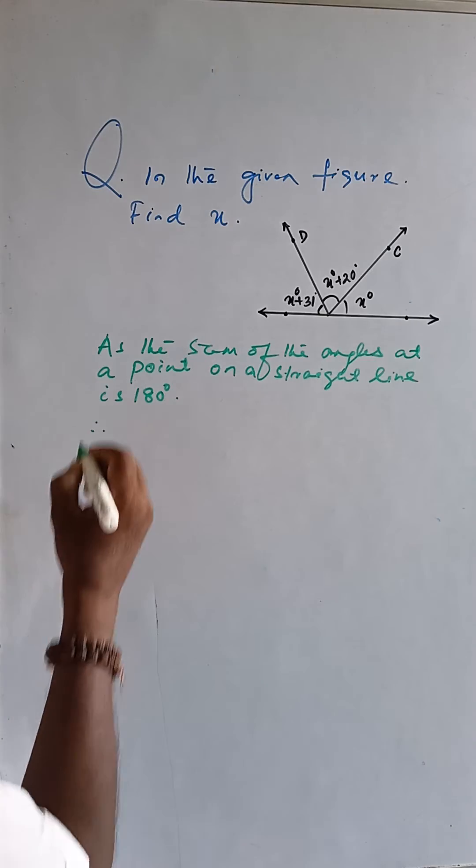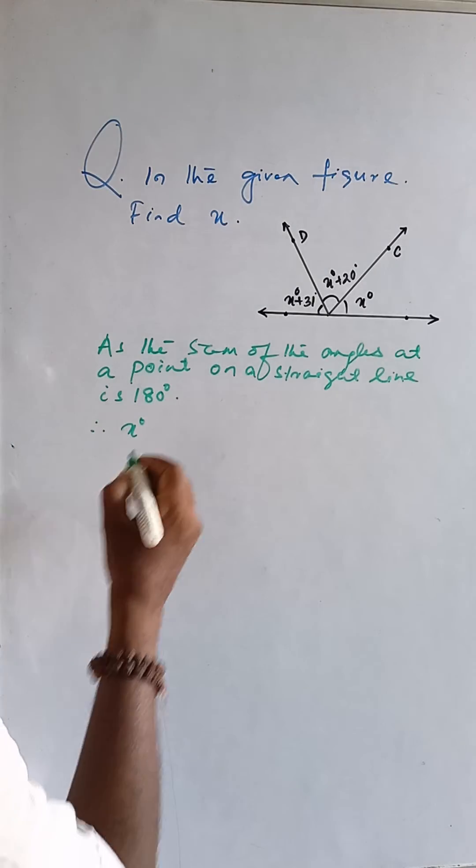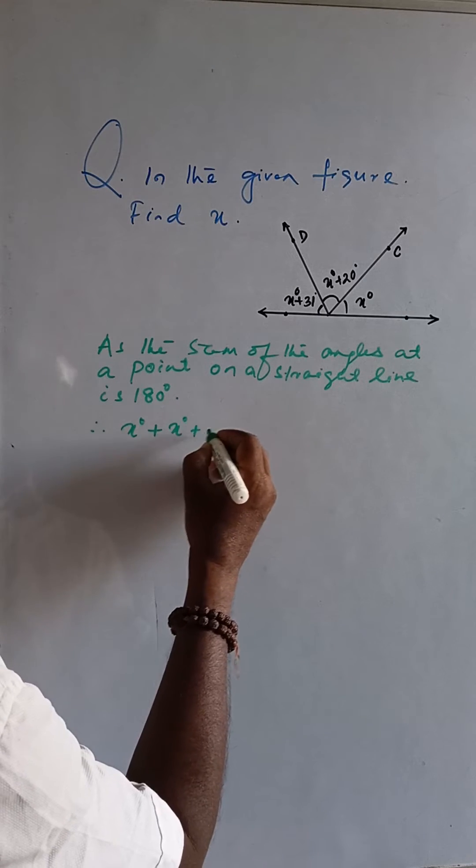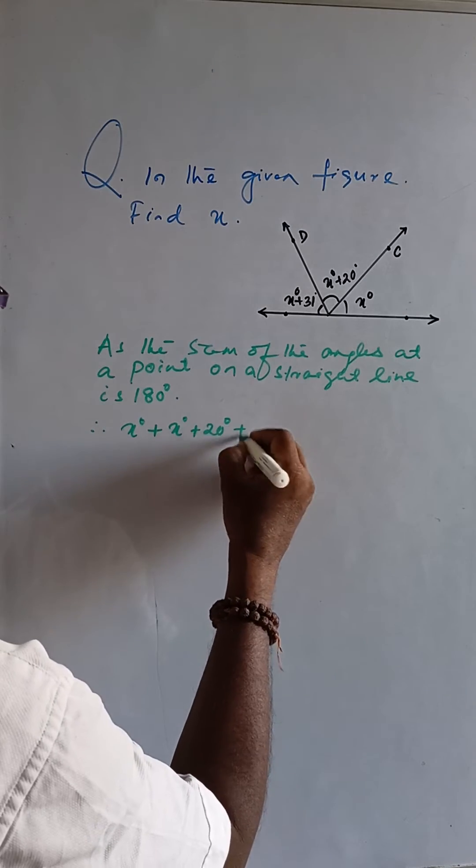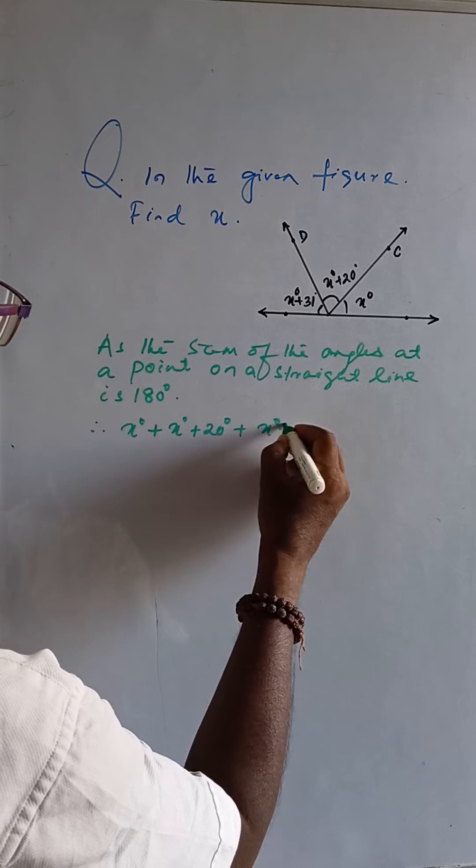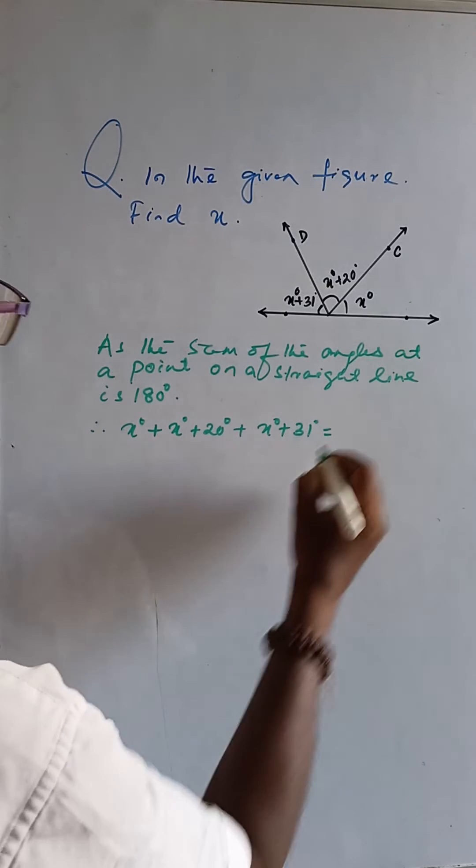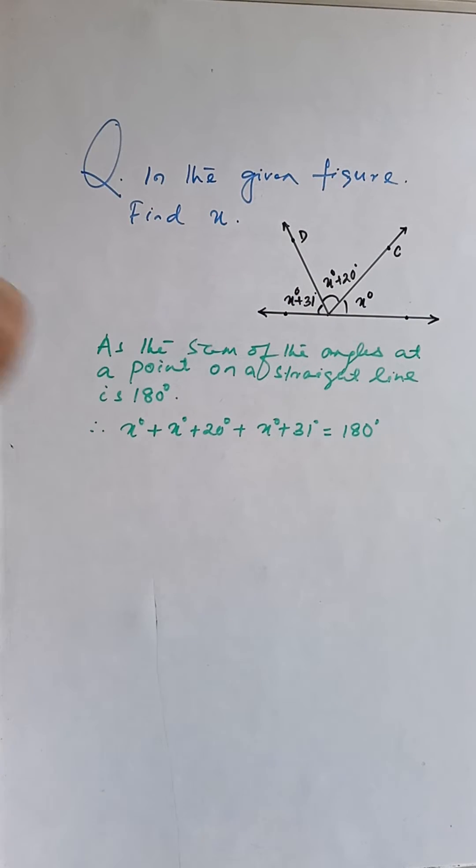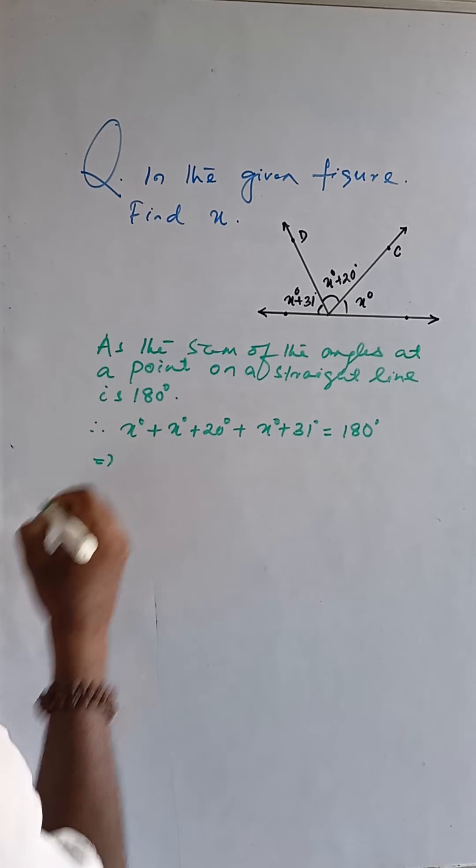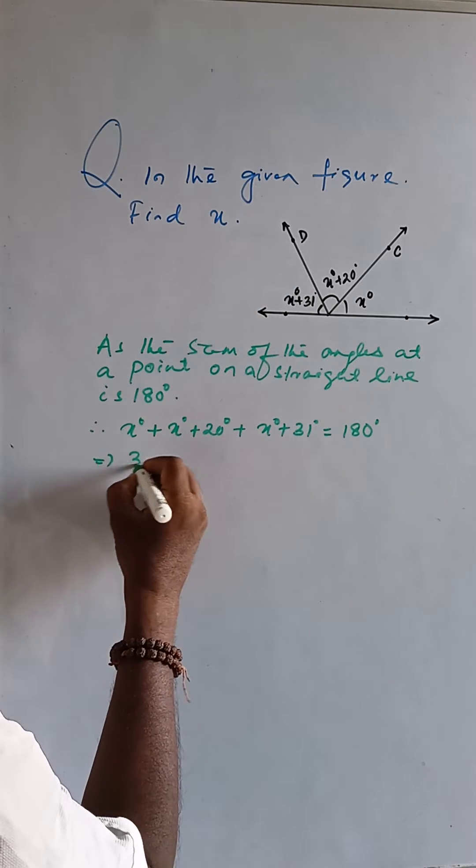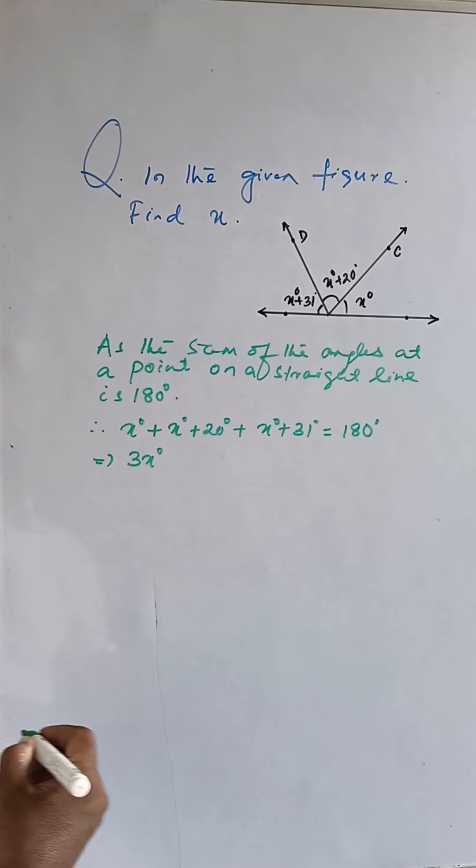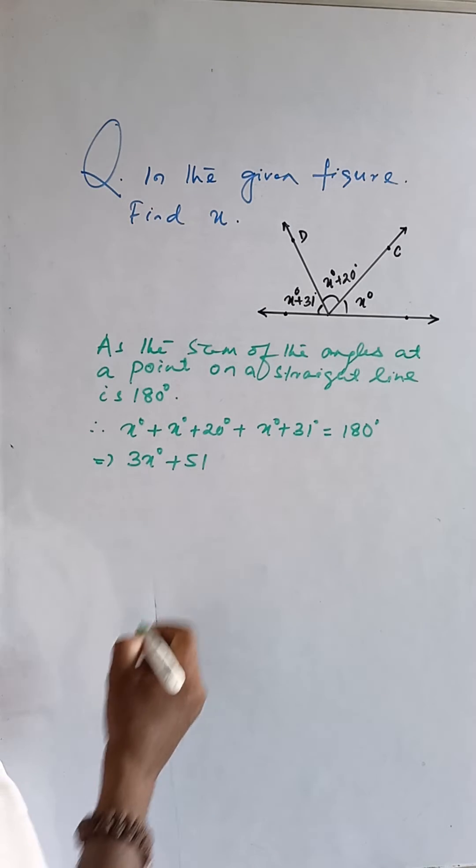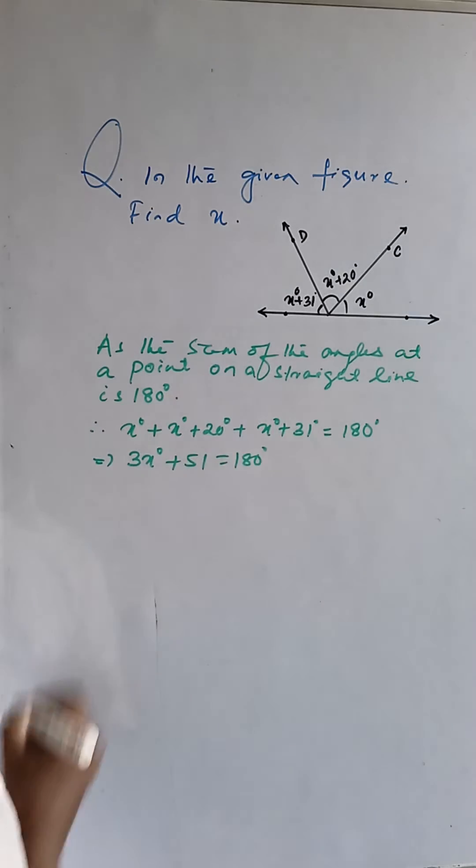That means x degrees plus x degrees plus 20 degrees plus x degrees plus 31 degrees is equal to 180 degrees. Now this is 3x degrees plus 51 equals 180 degrees.